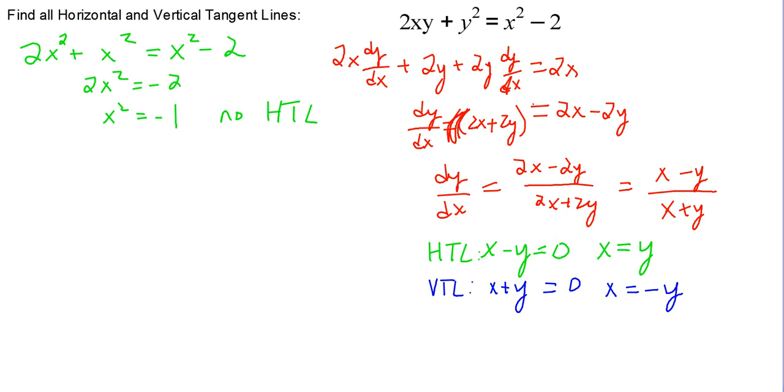For vertical tangent lines, we'll go in and replace all of the x's with negative y. So 2 times negative y times y is negative 2y squared, plus y squared equals, and if x is negative y, this becomes a positive y squared minus 2.